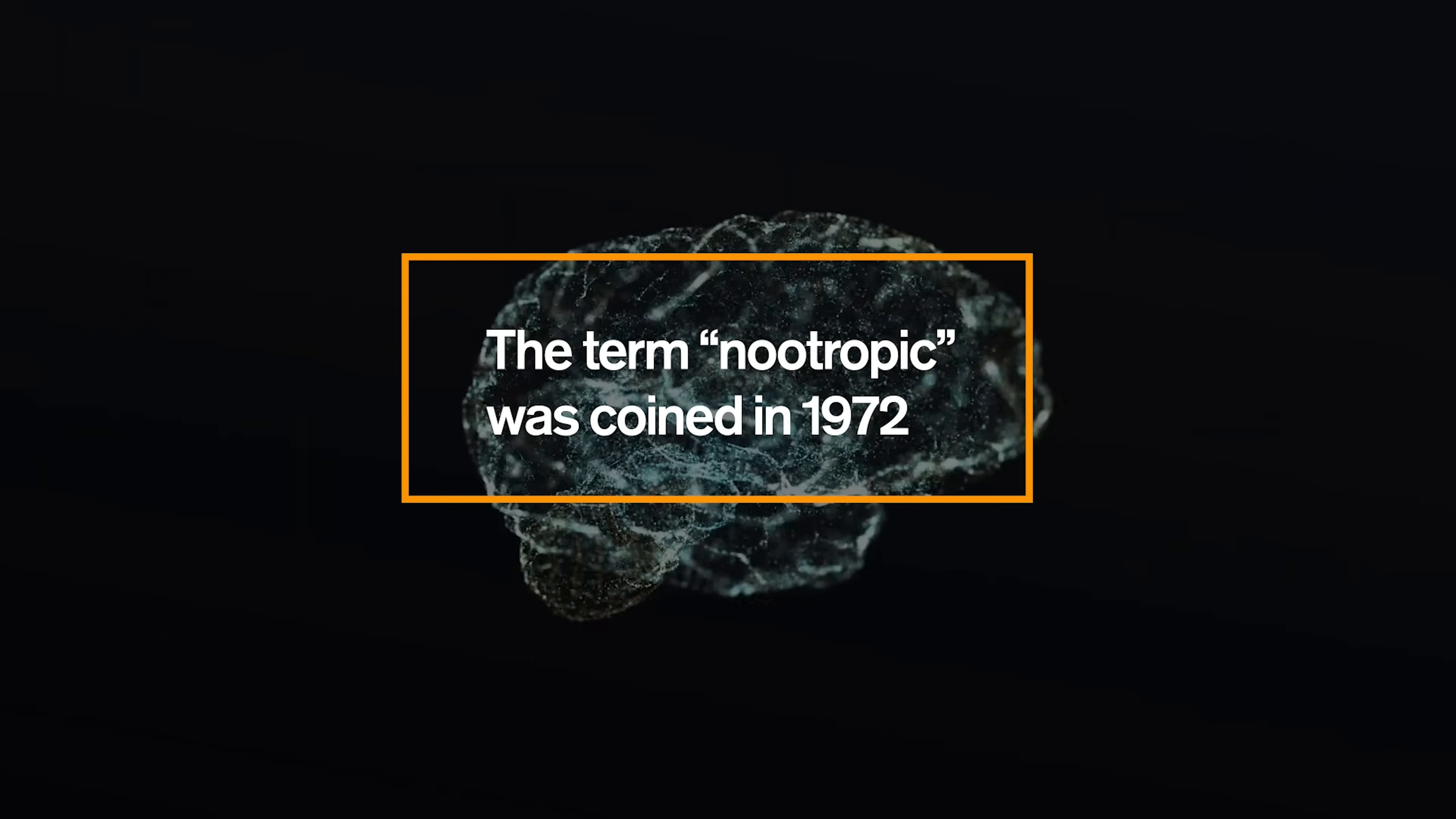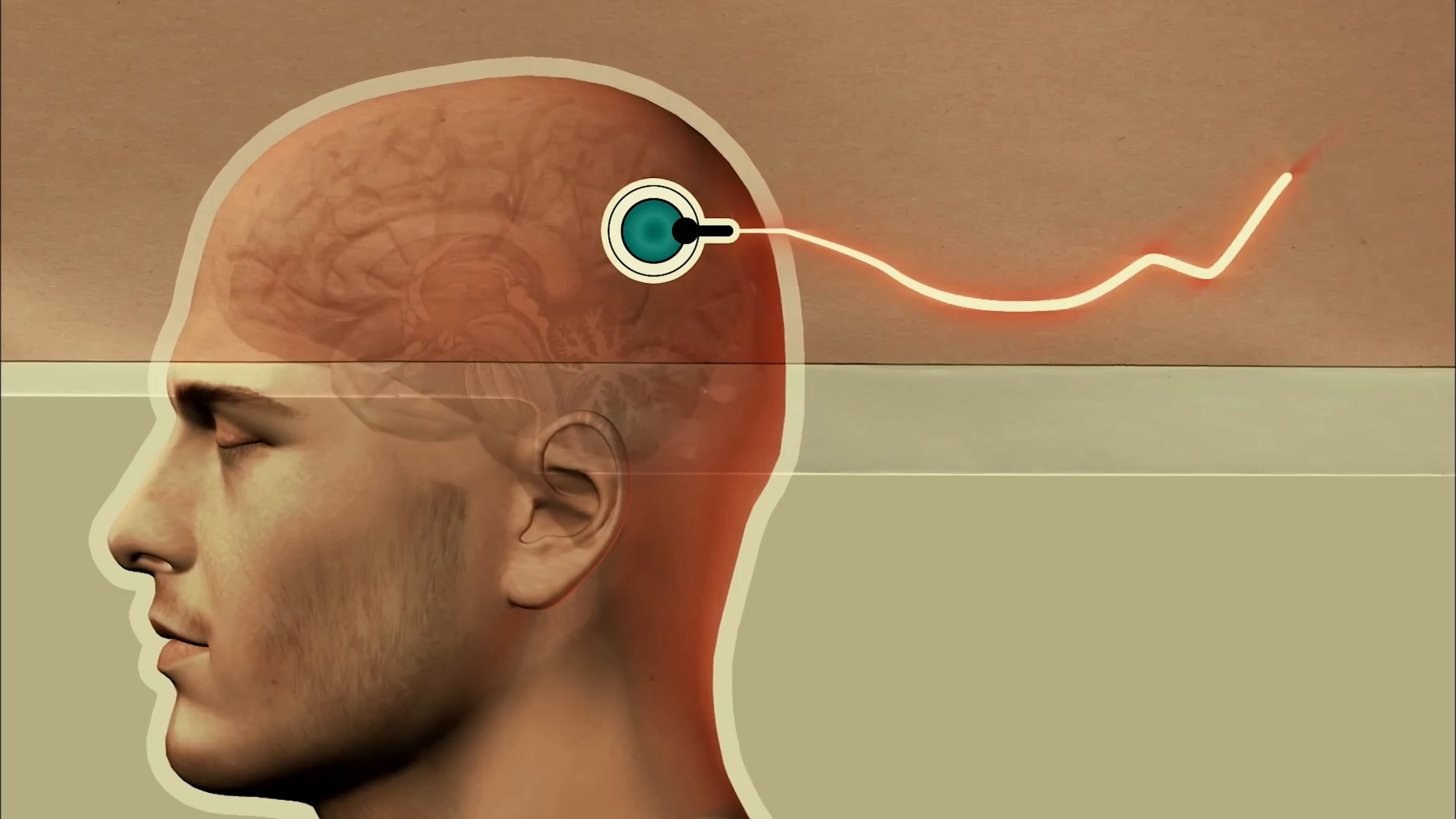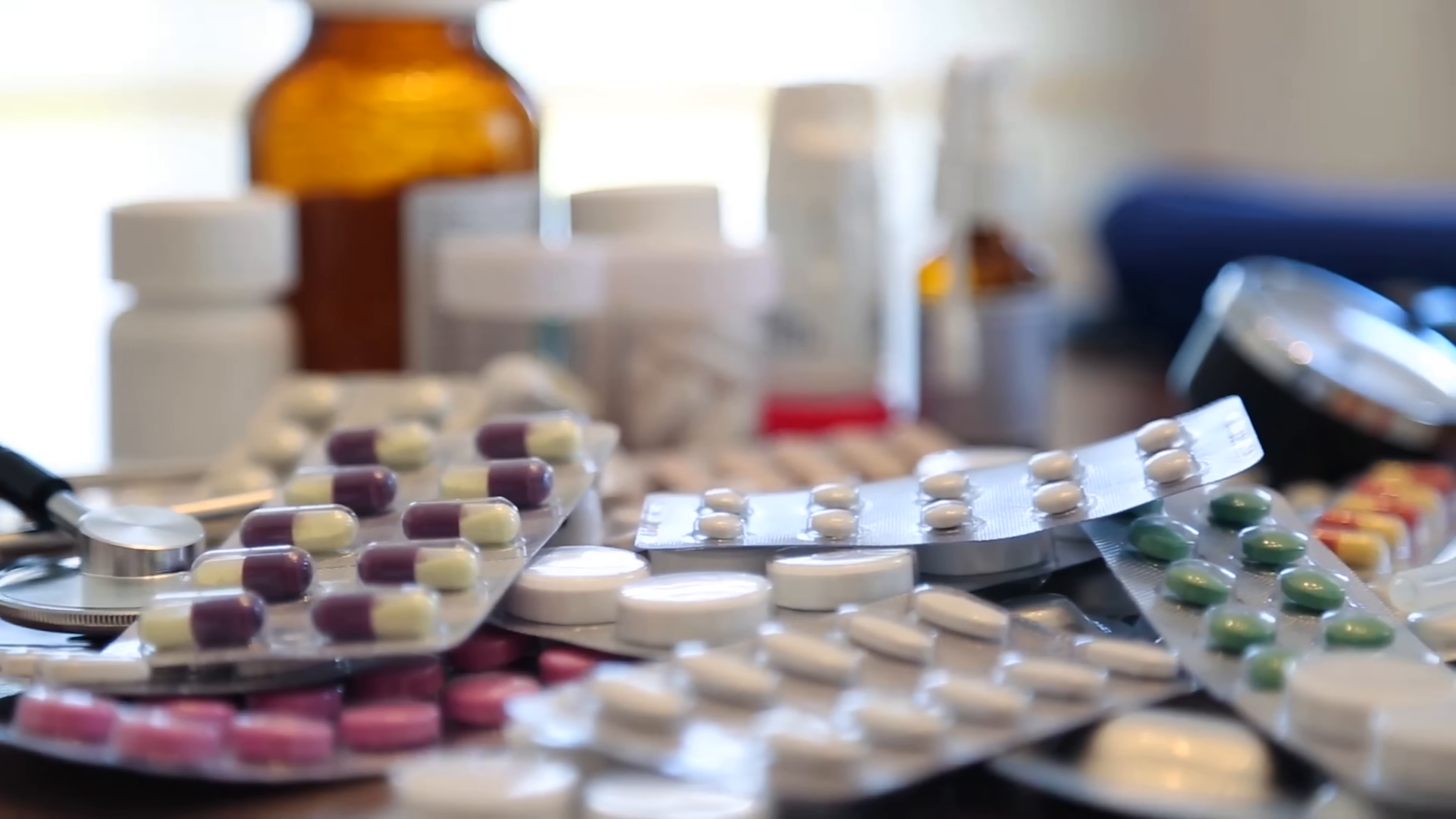The term nootropic was coined in 1972 by Romanian psychologist and chemist Dr. Cornelio Giurgia, who defined it using several key criteria. According to him, a true nootropic should enhance learning and memory, facilitate communication between brain hemispheres, protect the brain from physical or chemical injuries, improve resistance to stress, and have very few or no side effects.